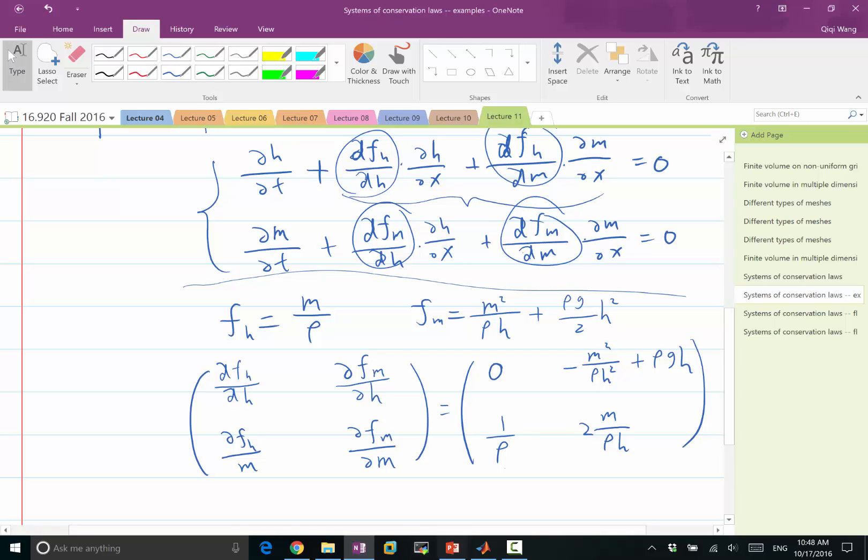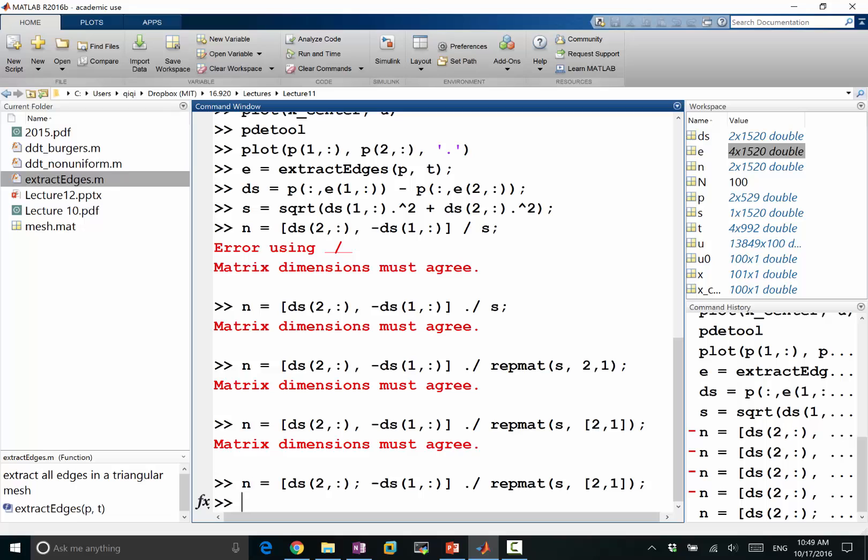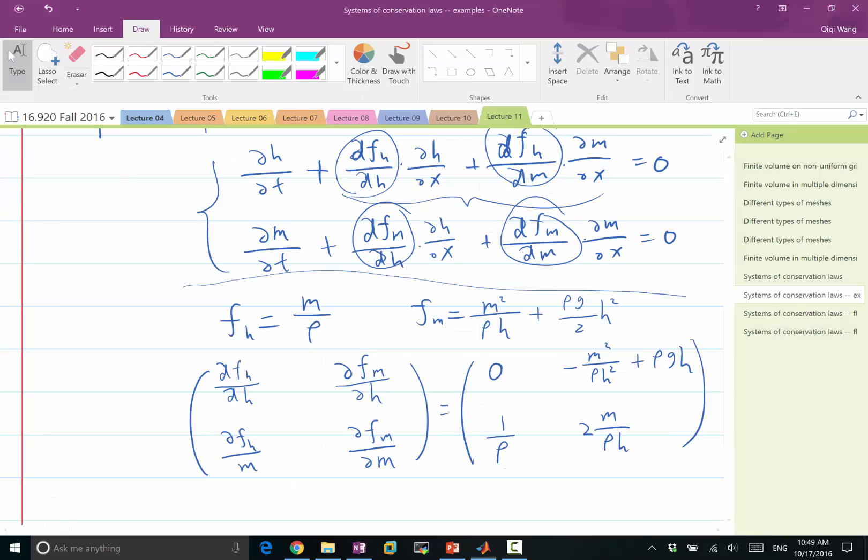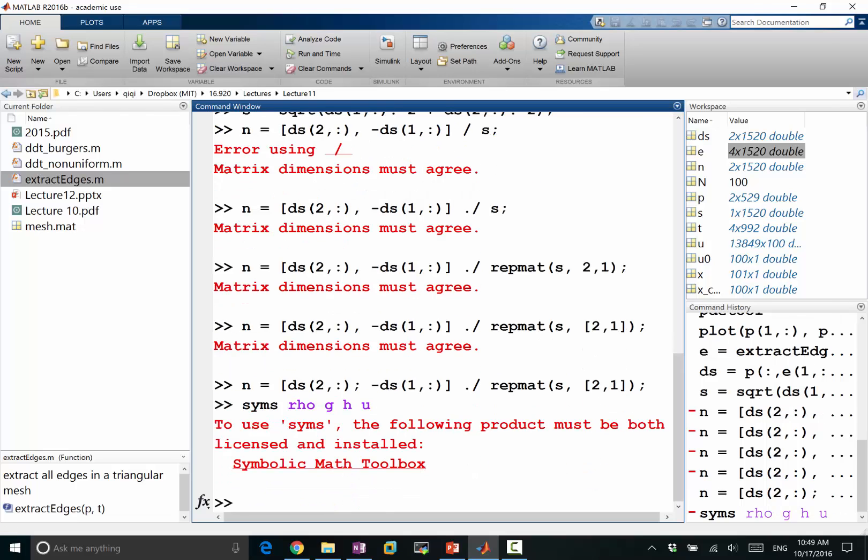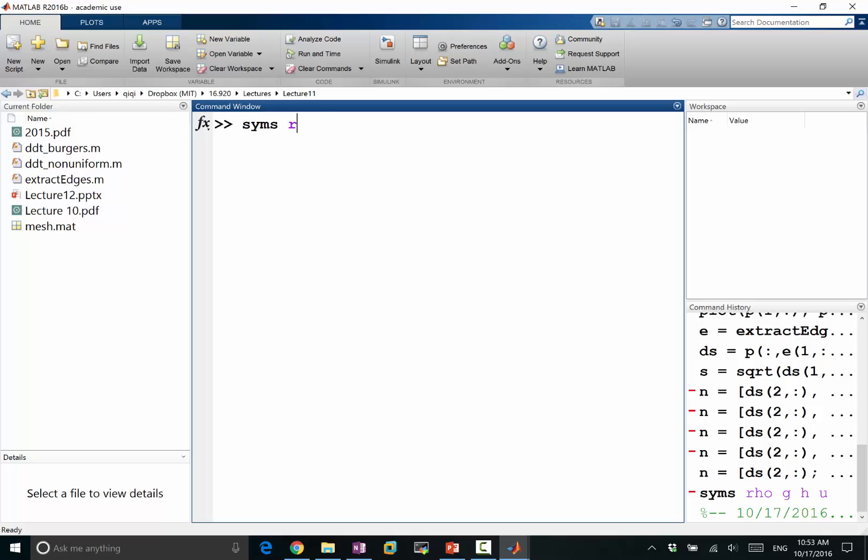Okay. So for example, let's figure out what are the eigenvalues of this matrix. And I will show you how to do that. So let's use the symbolic toolbox in MATLAB. So we are going to define symbolic variables rho G, H, U.